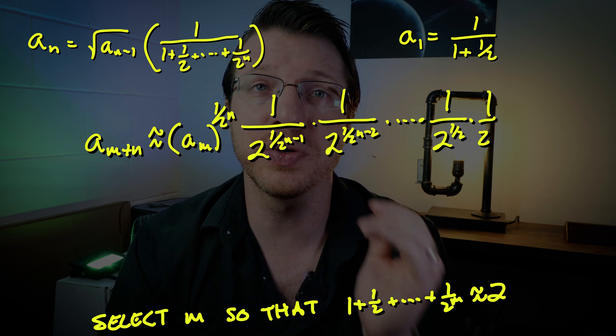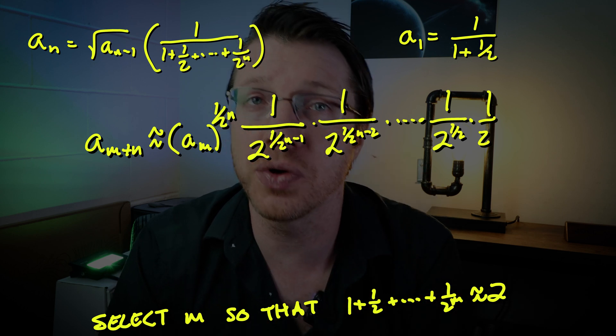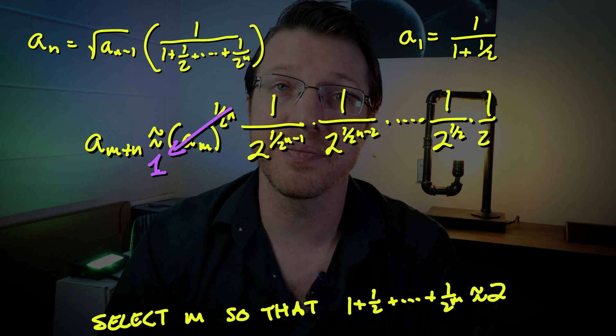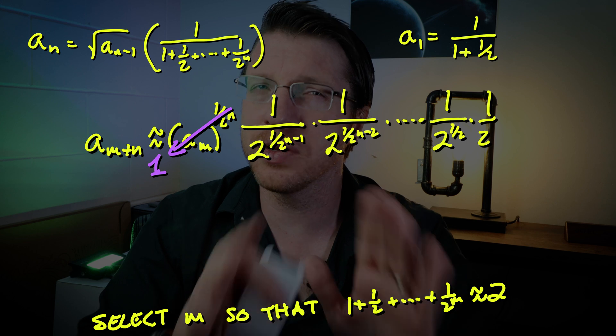Then let's look at aₘ₊ₙ. The square rooting is going to continue happening to aₘ and that means the limit of that should go to 1 as n goes to infinity. And since we have a limit going to 1 in a product we can really ignore that term.